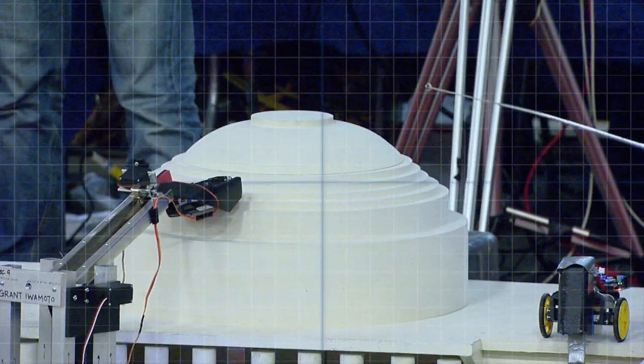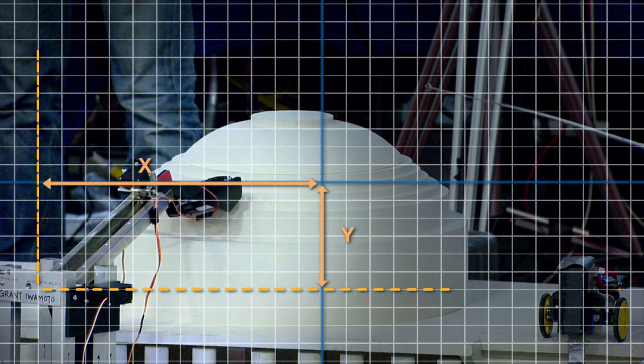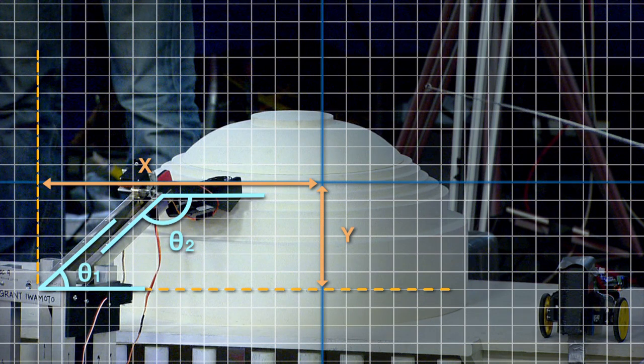Instead, we might determine the location for the base of the arm, and we can measure the angles for different parts of the arm. We need to use the measurements that we can make in order to determine the location of the gripper.